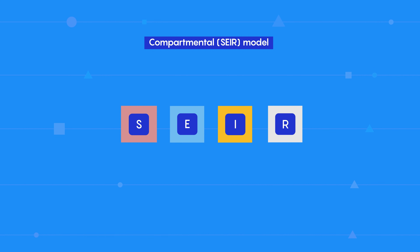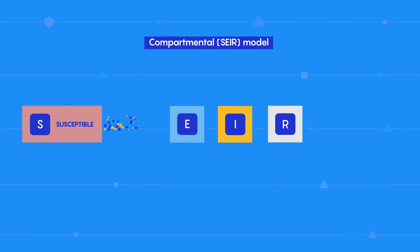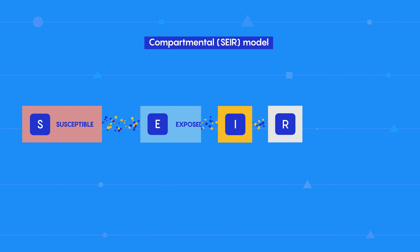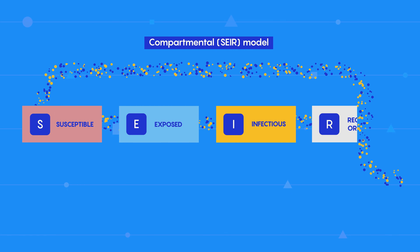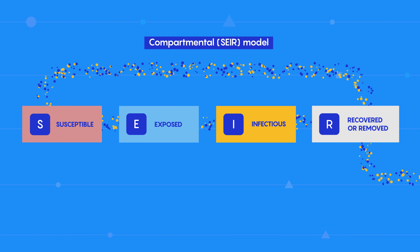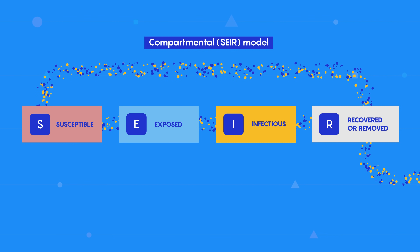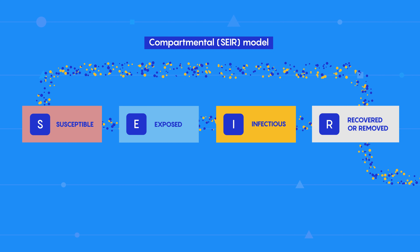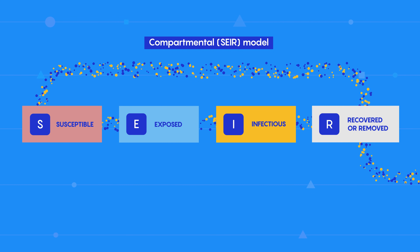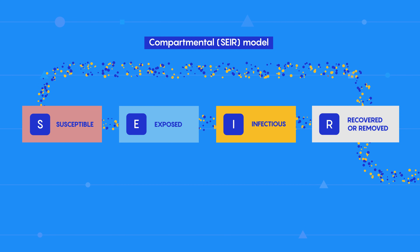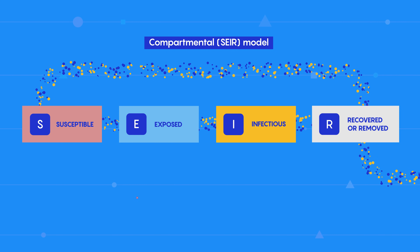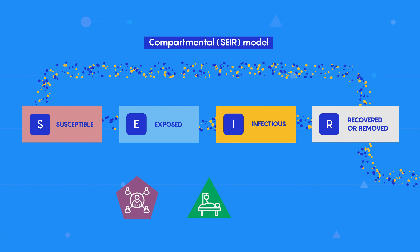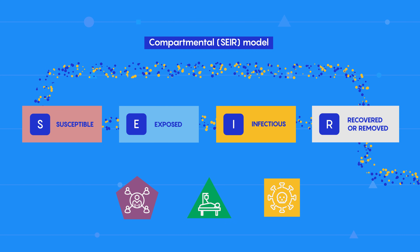Everyone in the population falls into one of these categories: S for susceptible to the disease, E for exposed, I for infectious, and R for recovered or removed. You can think of these compartments as different stages of the disease. Modelers use differential equations to simulate how people move from one stage to the next, based on data like infection rate, hospitalization rate, and fatality rate.